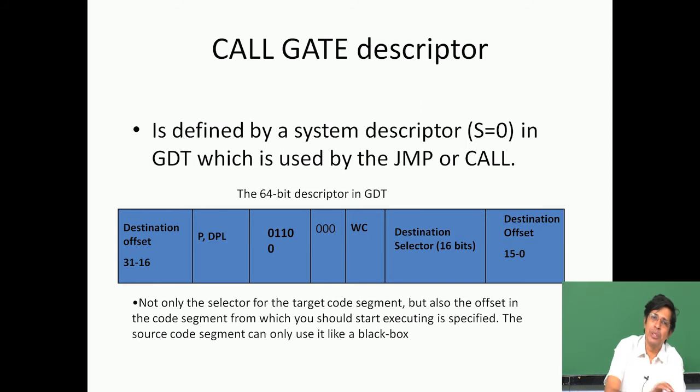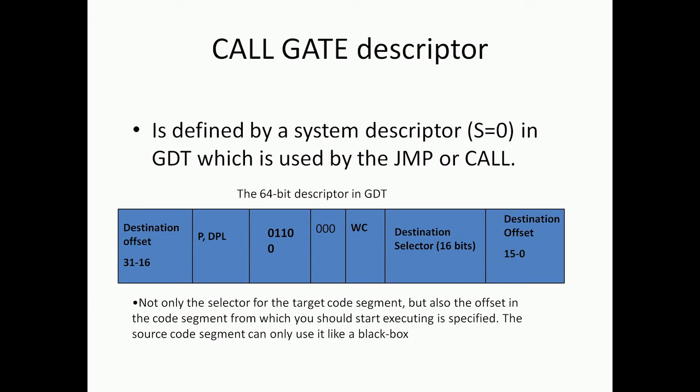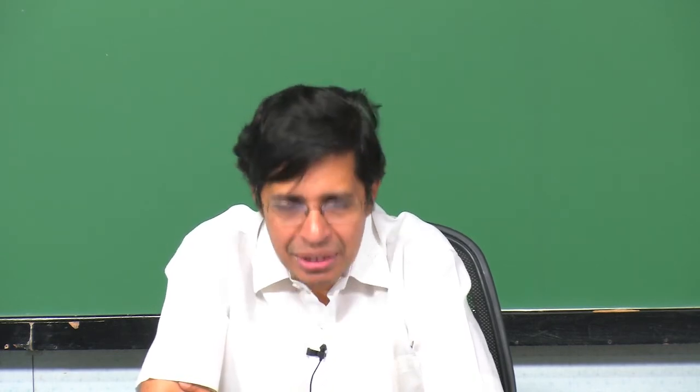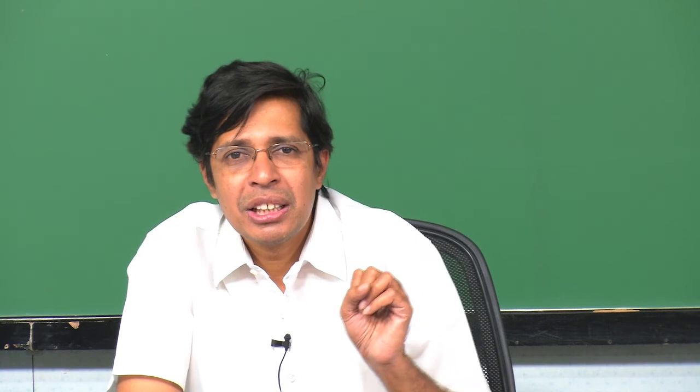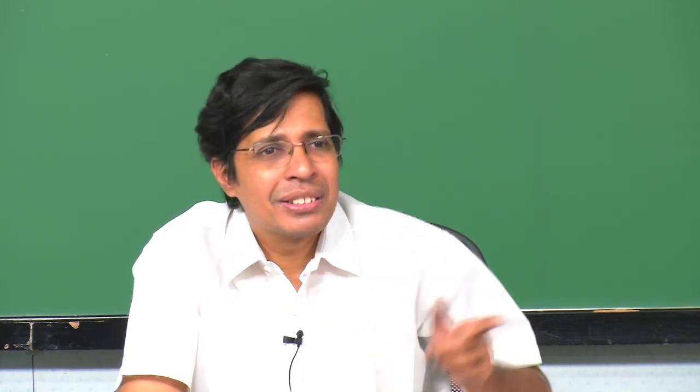Another interesting point about the call gate: there is a DPL in the call gate descriptor. This call gate cannot be accessed by just anyone — any Tom, Dick, and Harry cannot access it. If I make DPL equal to 2, only privilege levels 2, 1, and 0 can use my call gate. If DPL is equal to 1, privilege levels 3 and 2 cannot use this call gate. If DPL is 3, then anybody can come. So I have one more level of protection using DPL, meaning though I am a call gate open for higher privilege levels, not every privilege level can come through.